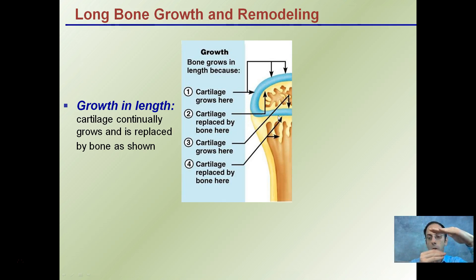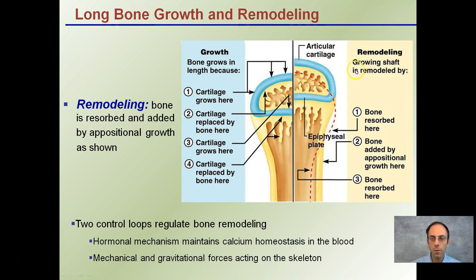Remodeling means the growing shaft is remodeled in relation to conditions or stresses the bone may be under. Bone is reabsorbed in some regions and added through appositional growth in others, slightly changing the shape of the bone. This remodeling is regulated under two different control mechanisms: one hormonal, which maintains calcium homeostasis in the blood, and another involving mechanical or gravitational forces acting on the skeleton.